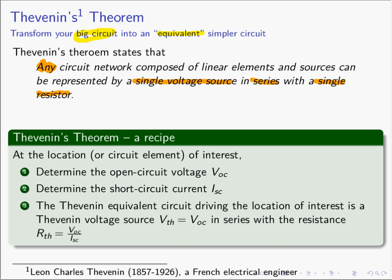For Thevenin's Theorem, if we have a particular location of the circuit that we're interested in, or a particular element we'd like to figure out how it behaves, we need to find a Thevenin equivalent circuit around it. At the circuit of interest, we need to find the open circuit voltage VOC. Then next, we're going to find the short circuit current ISC. We can then get the Thevenin circuit by saying V_Thevenin equals VOC.